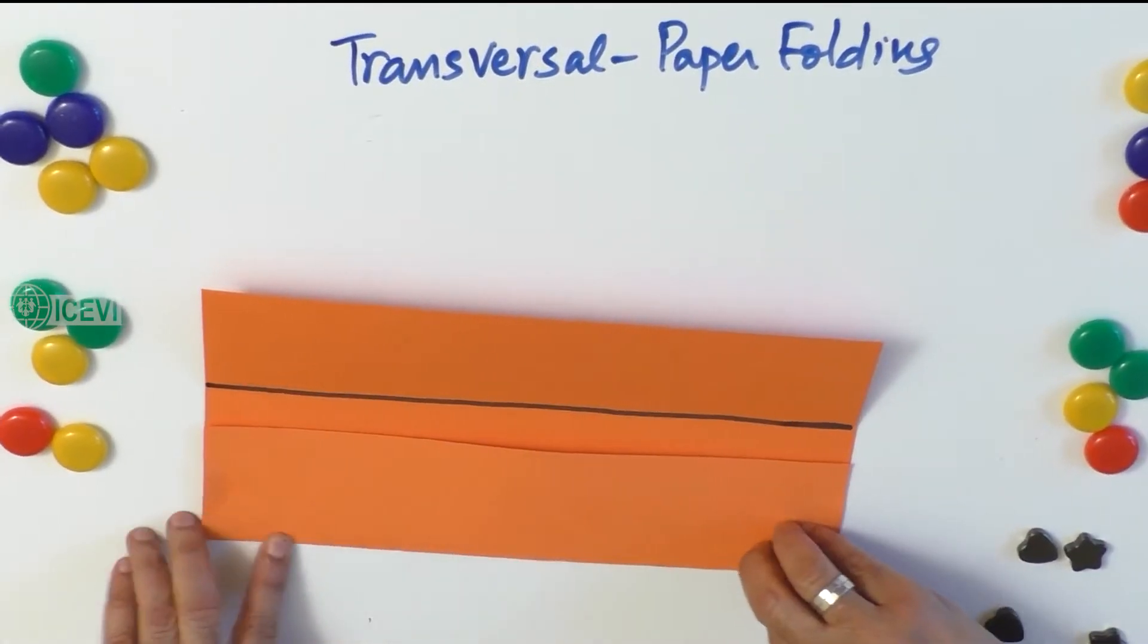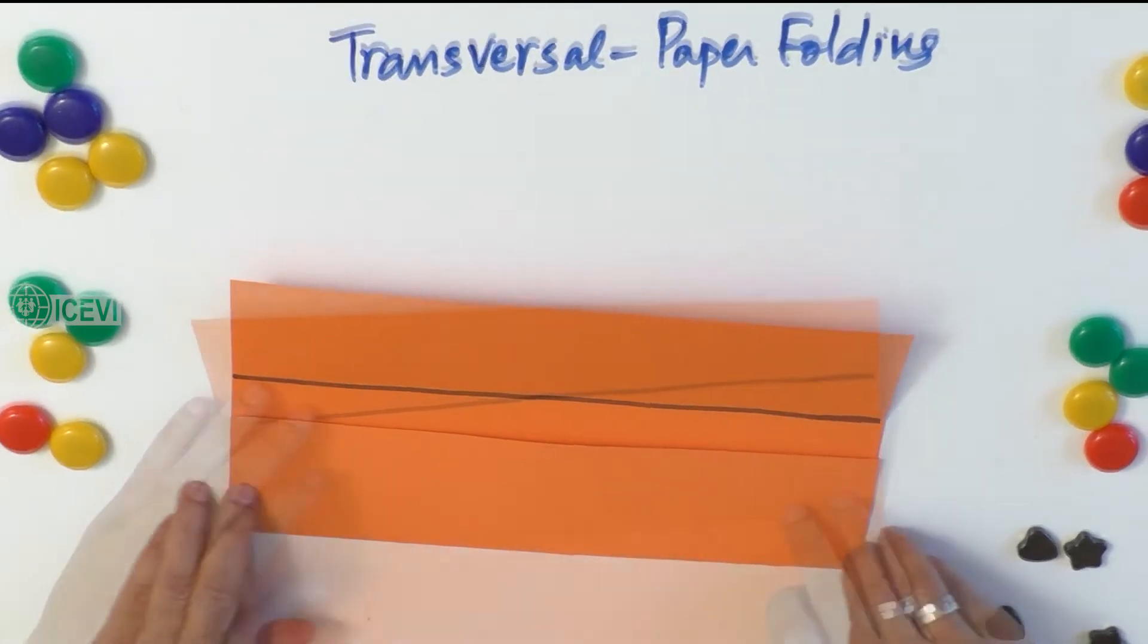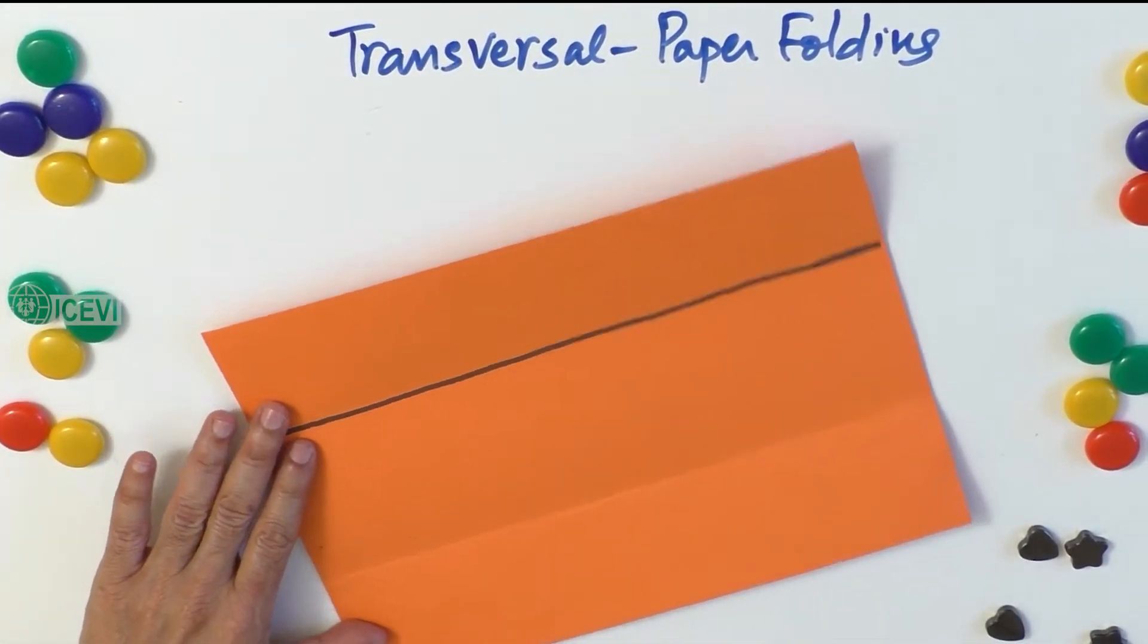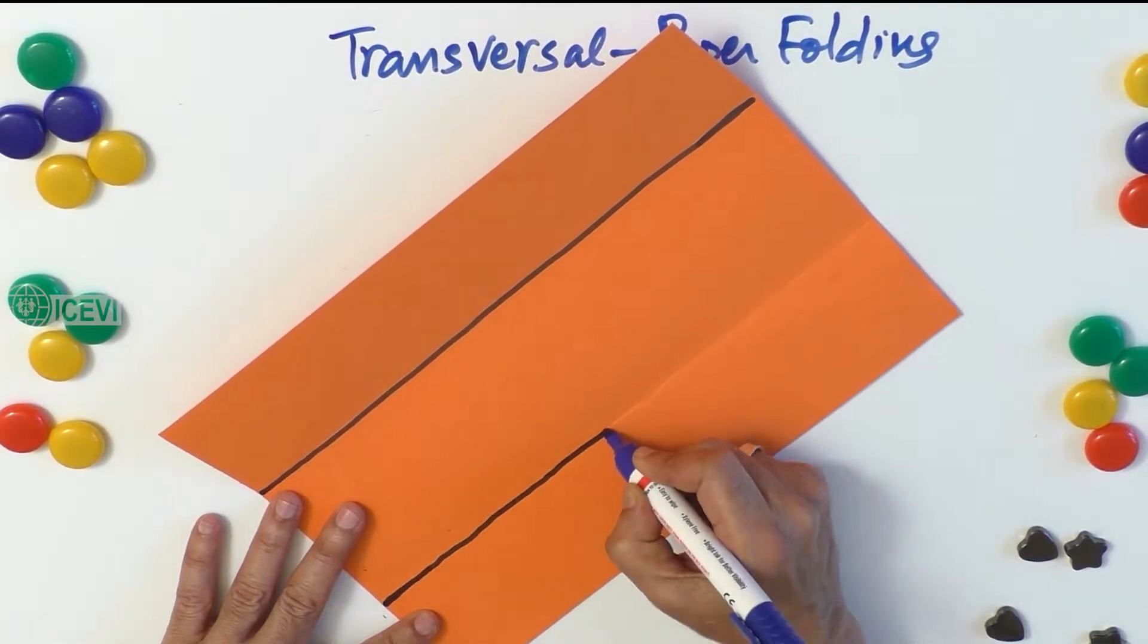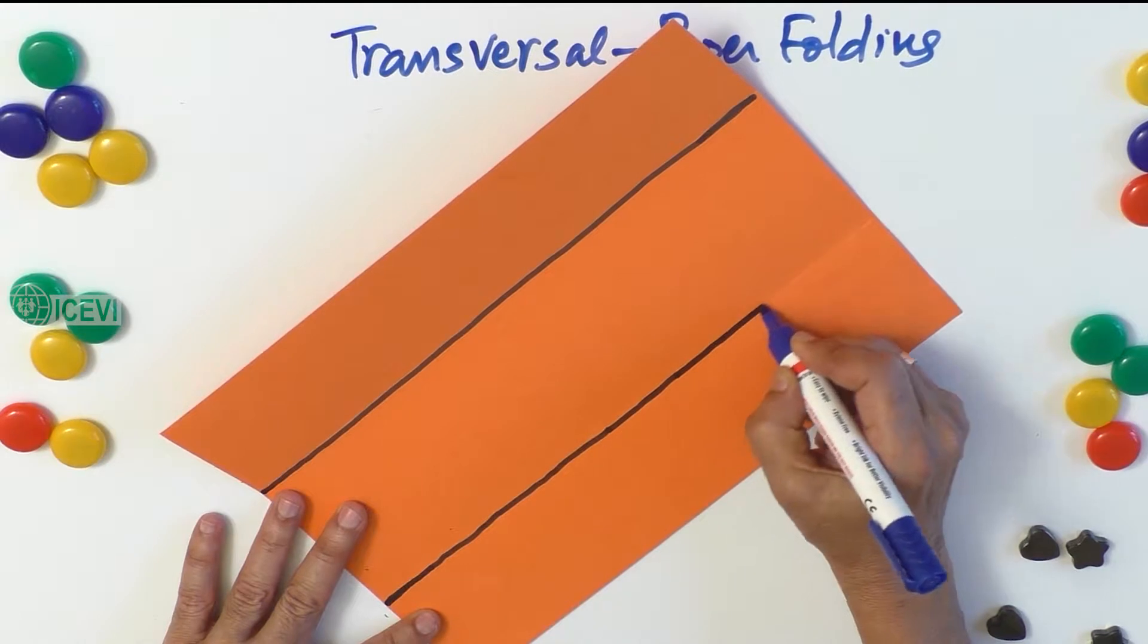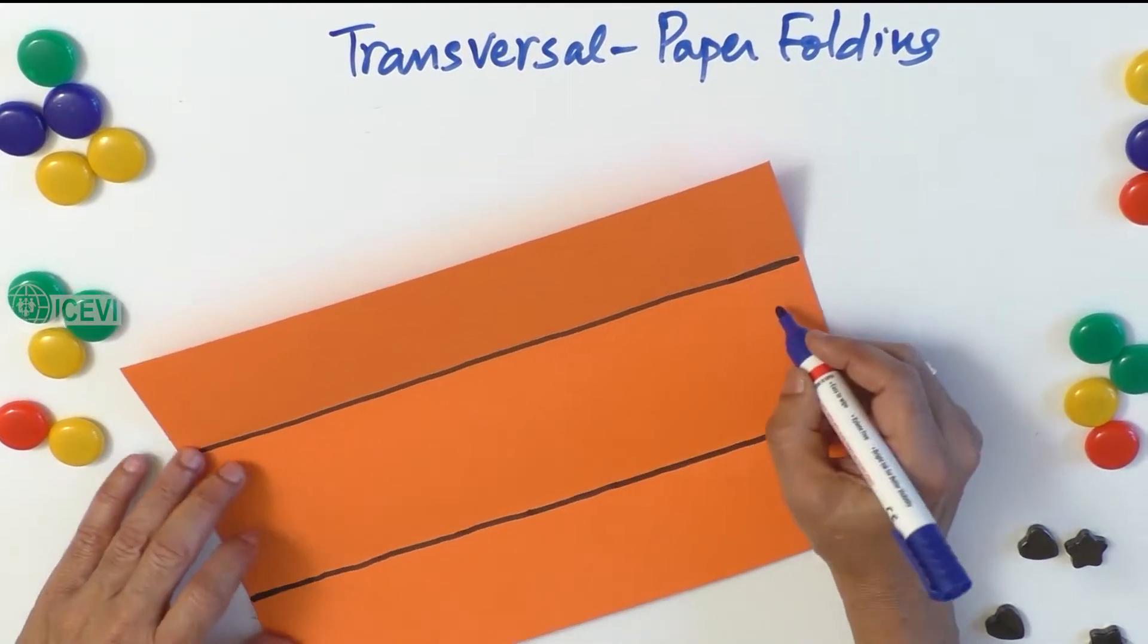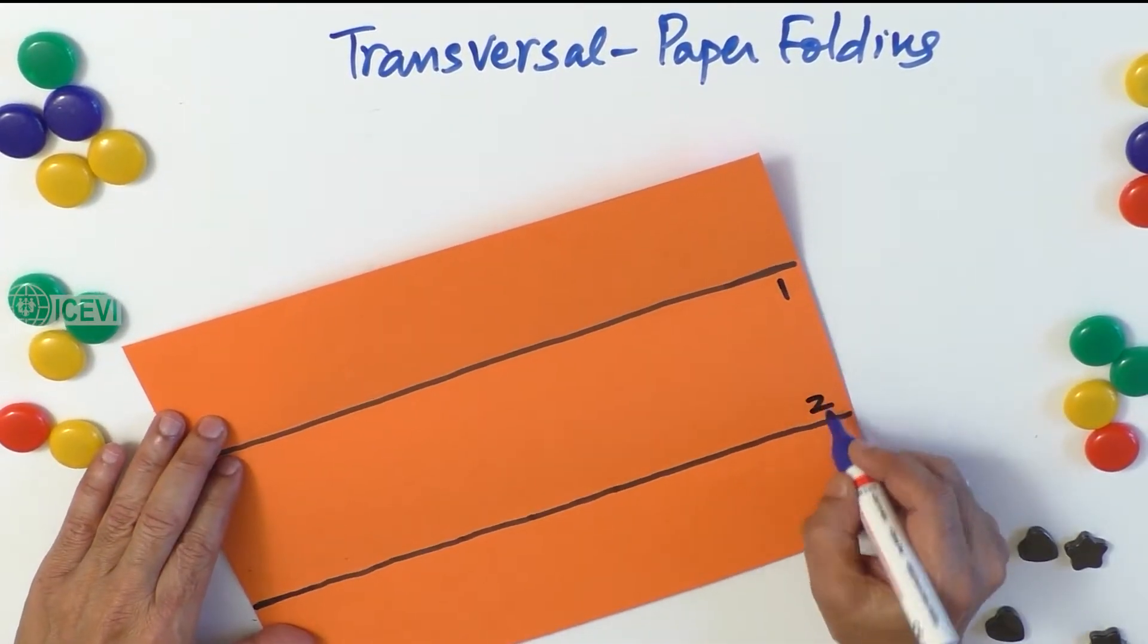So then what happens? Now this has become a line. And now line one and line two, these are parallel lines. So we have formed parallel lines one and two.